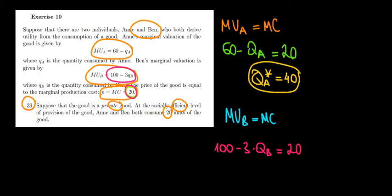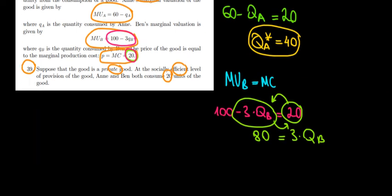Now what's the result? If we take 20 to the other side, it becomes 100 minus 20, which is 80, equals 3 times the quantity of Ben. So the quantity of Ben is going to be equal to 80 divided by 3.